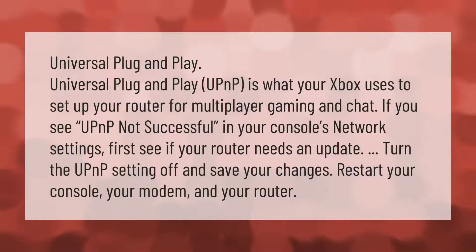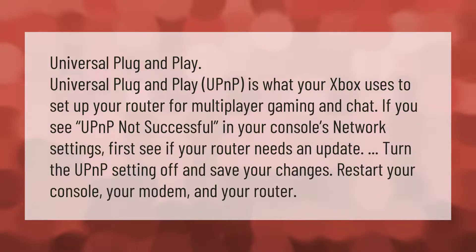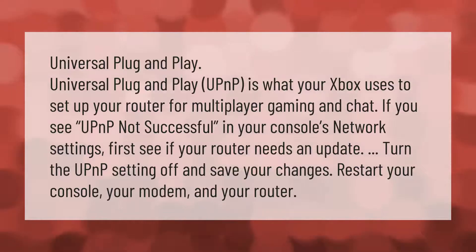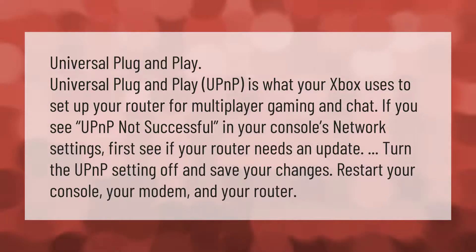Universal Plug and Play (UPnP) is what your Xbox uses to set up your router for multiplayer gaming and chat. If you see 'UPnP not successful' in your console's network settings, first check if your router needs an update, then turn the UPnP setting off and save your changes. Restart your console, your modem, and your router.